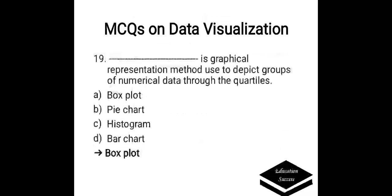Which is a graphical representation method used to depict groups of numerical data through quartiles? Options are: A. Box plot, B. Pie chart, C. Histogram, D. Bar chart. Correct answer is Box plot. It is a graphical representation method used to depict groups of numerical data through the quartiles.